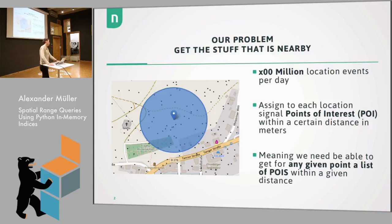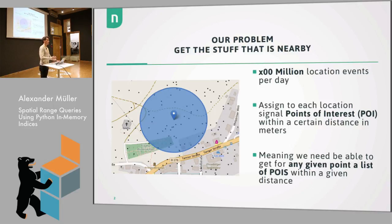We are at Bino's, getting pretty much a couple of hundred million location events every day. We actually want to give this data some dimensionality, some additional information, and therefore we assign to those events points of interest. What is a point of interest? It can be a bar, an ATM, or pretty much anything - a park bench is also a point of interest apparently. We get this from OpenStreetMap and have roughly, for Germany, 1.567 billion points of interest. The objective is that for each and every event, we get the nearby points of interest within a limited radius - which sounds easy, but it's actually not easy if you need to do it millions of times a day.